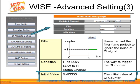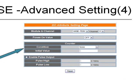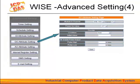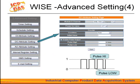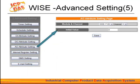You can also set the initial value of the counter in the initial value field. Now let's take a look at the digital output channel settings. You can set the power-on value to be on or off, and you can also set the counter as digital input. DO supports pulse output; you can set up pulse high and pulse low for the periodic pulse cycle. The AO attribute setting page allows you to set up an initial value for the analog output channel voltage when booting up.